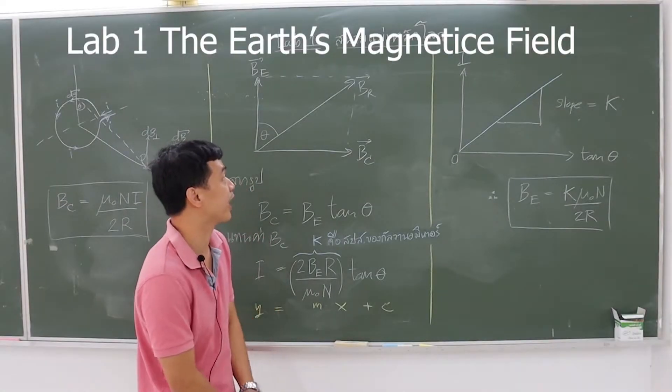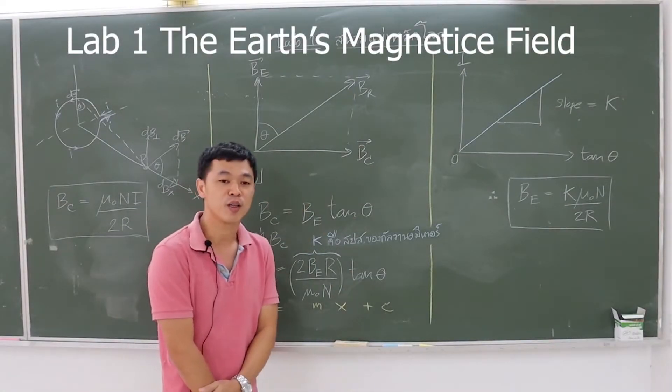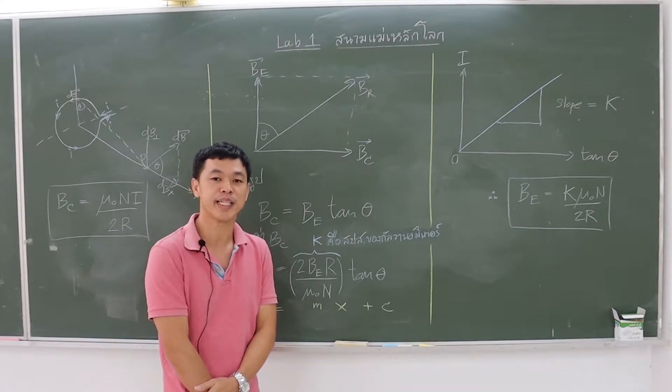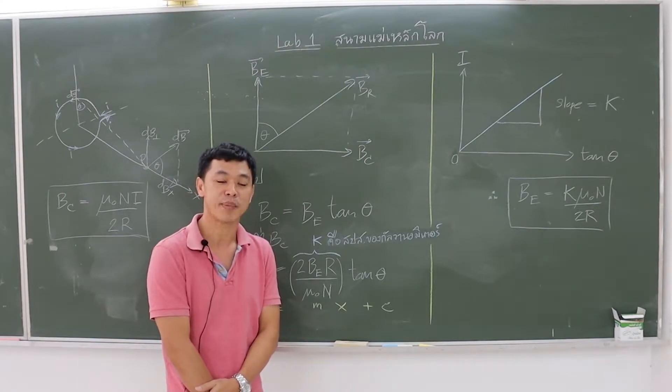Experiment 1 is the Earth's magnetic field. Its purpose is to enable students to calculate the Earth's horizontal magnetic field.